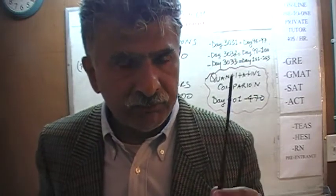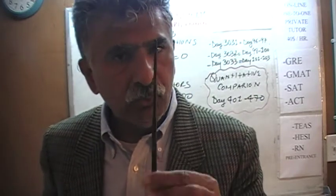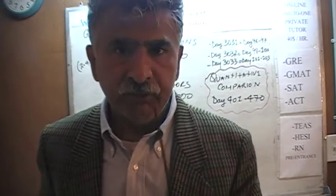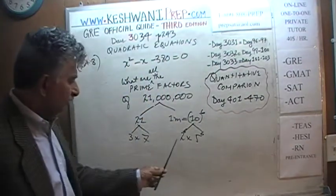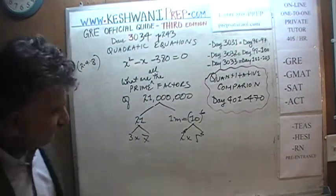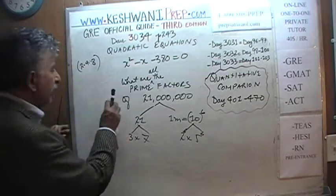The prime factors of 21 million are simply 3, 7, 2, and 5. Don't worry about arranging them numerically — just go in sequence as they appear: 21 is 3 × 7, and 10 is 2 × 5. The exact same trick we're going to apply here to factor 380.